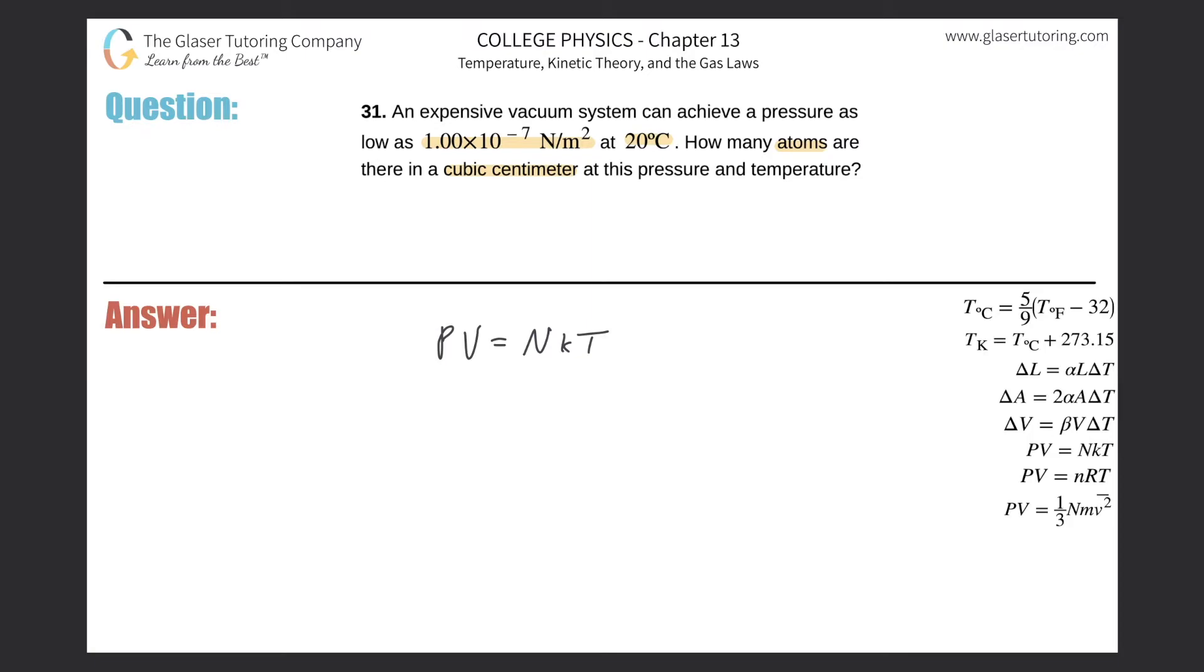So what I need to do here is solve for the number of atoms, which is basically N. So we're going to simply divide out KT from both sides, right? So we'll realize that then N is equal to PV over KT. It's lowercase K. Don't confuse that with Kelvin. This is the Boltzmann constant.